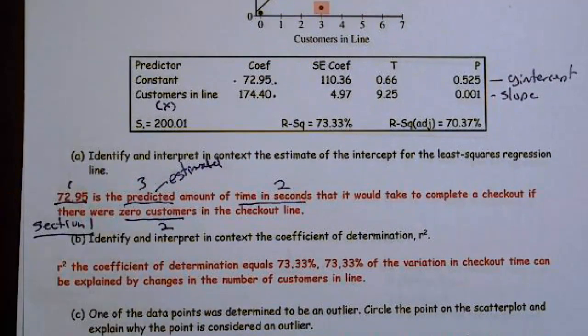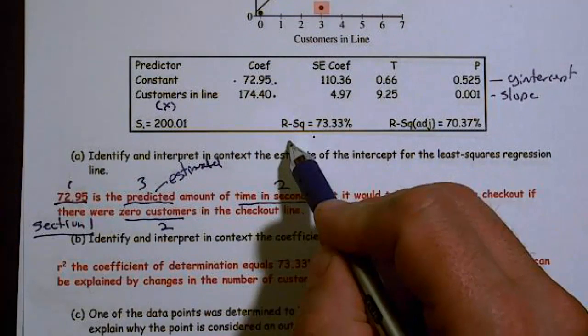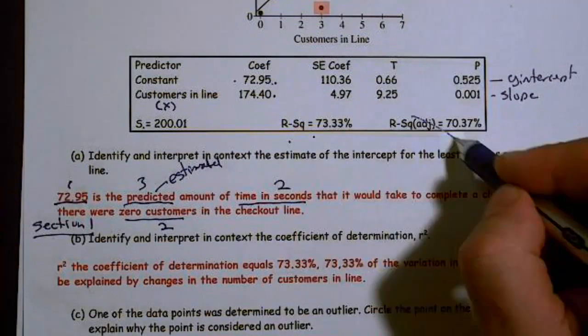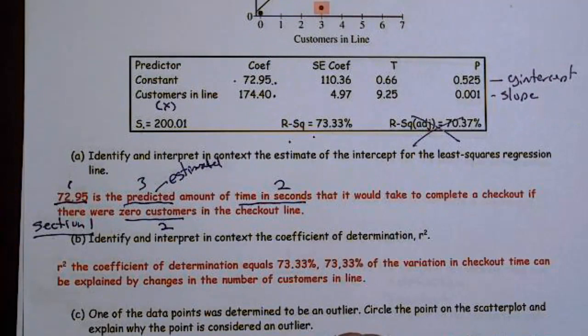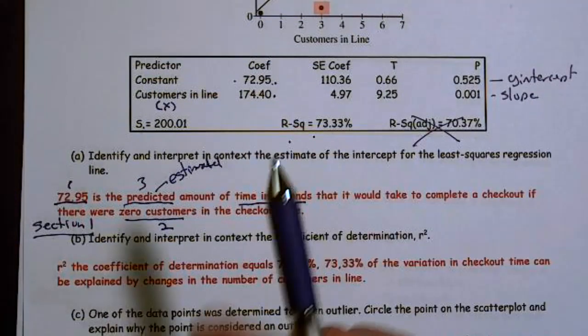And it tells you the amount of variation in time you would expect for a given number of customers. And then finally, we have our R squared. This is our coefficient of determination.